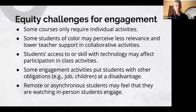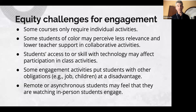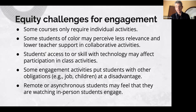Students' access to or skill with technology may affect their participation. This may be true for returning students who are less adept with technology, or for students who only have access to a smartphone and have a hard time toggling between different applications during a real-time class session. There are also challenges including unreliable internet access. Some engagement activities put students with other obligations at a disadvantage. In a flexible course with asynchronous pathways, how do we make sure those students aren't left out, and that remote students don't feel like they're just watching the in-person students engage like a movie?